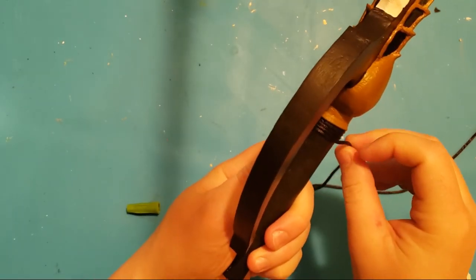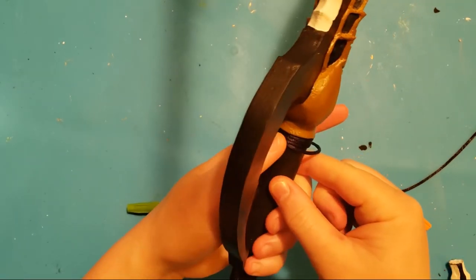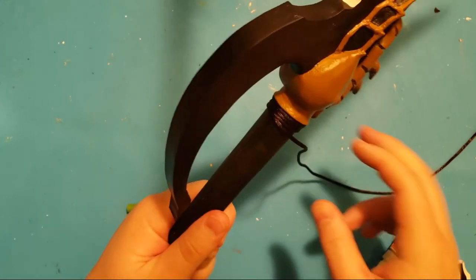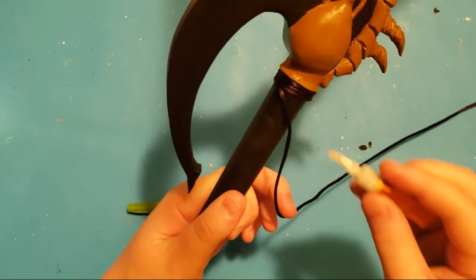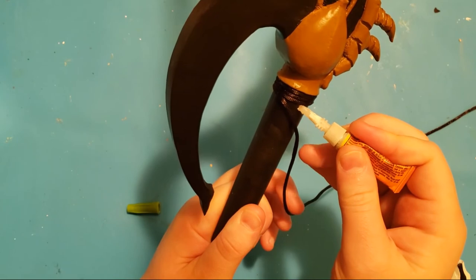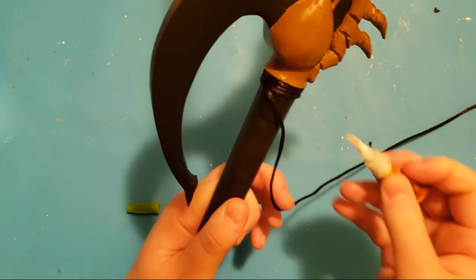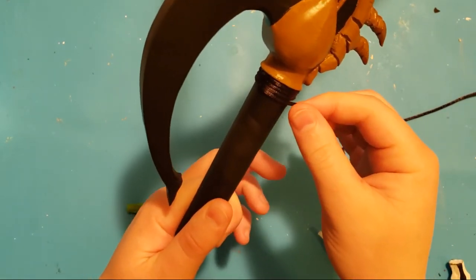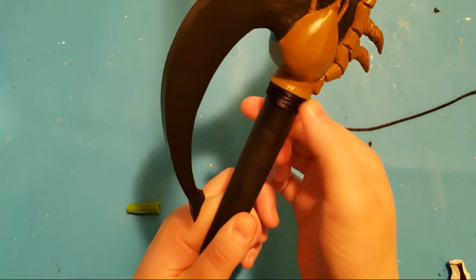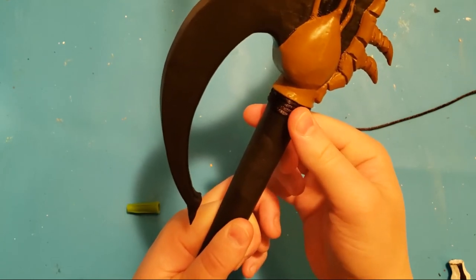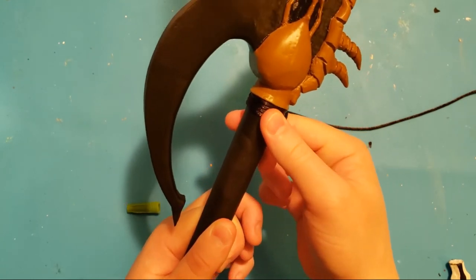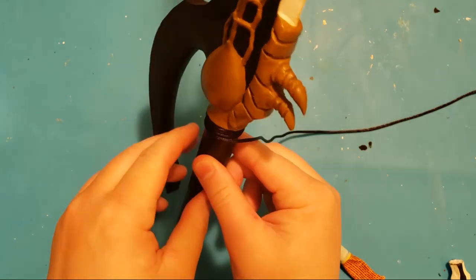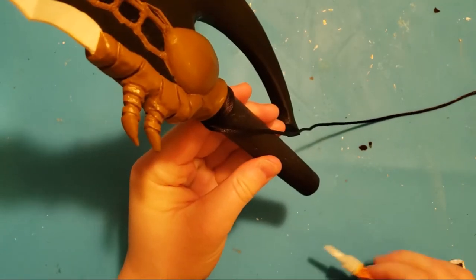Before reattaching the pommel, I wrapped most of the handle in this cheap nylon rat tail cord I got off Amazon. I used super glue to attach this, and because I didn't want it getting messed up, I went really slowly and used about three dots of glue per rotation. The handle looks pretty good, although I didn't do a perfect job. I'm really glad I painted it black before wrapping this, so that my mistakes aren't as obvious.